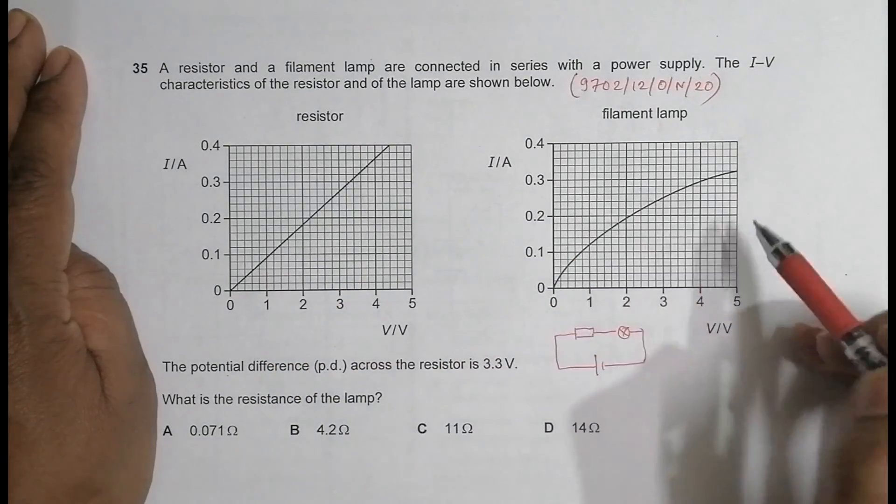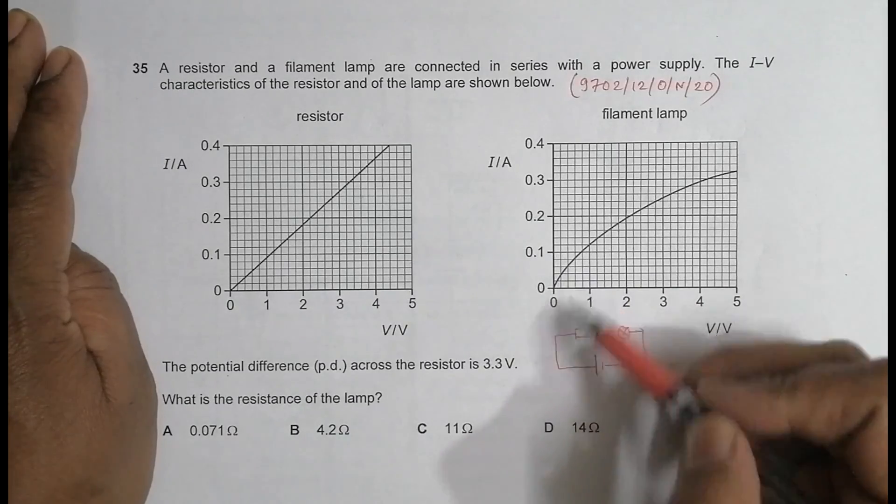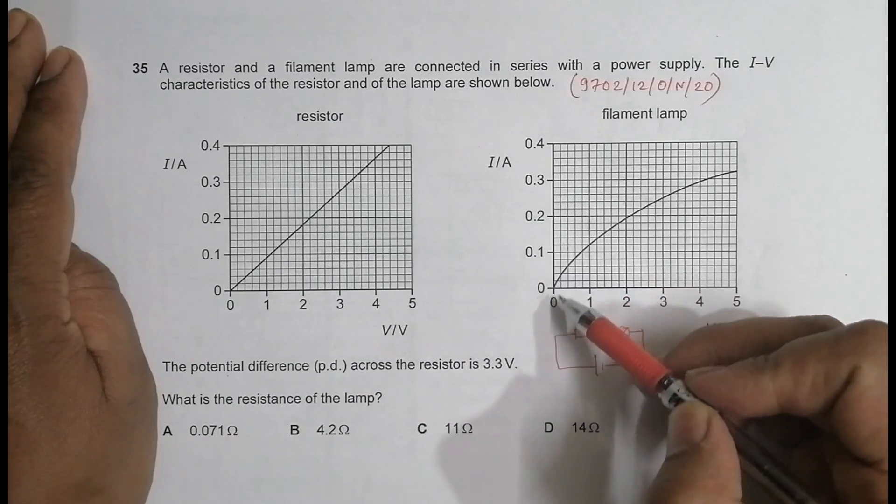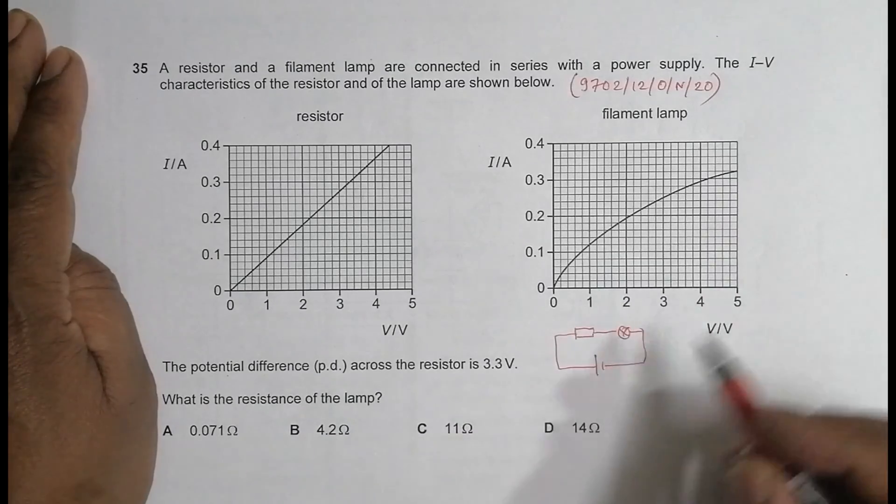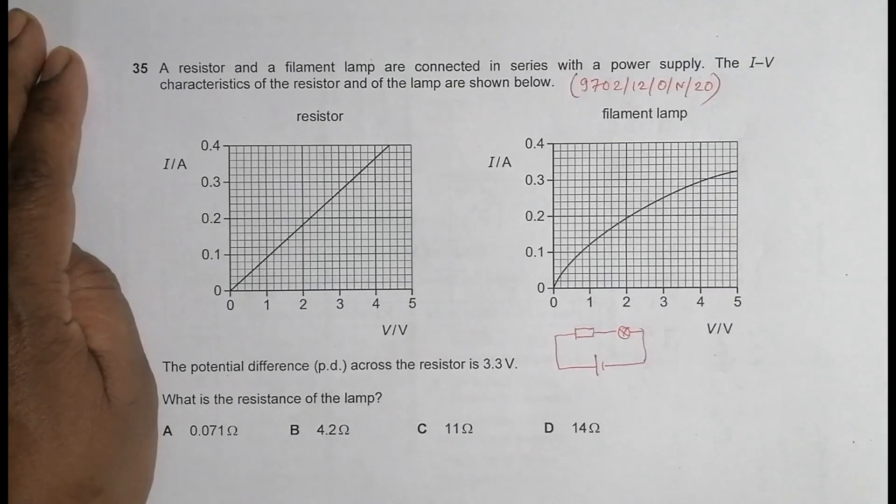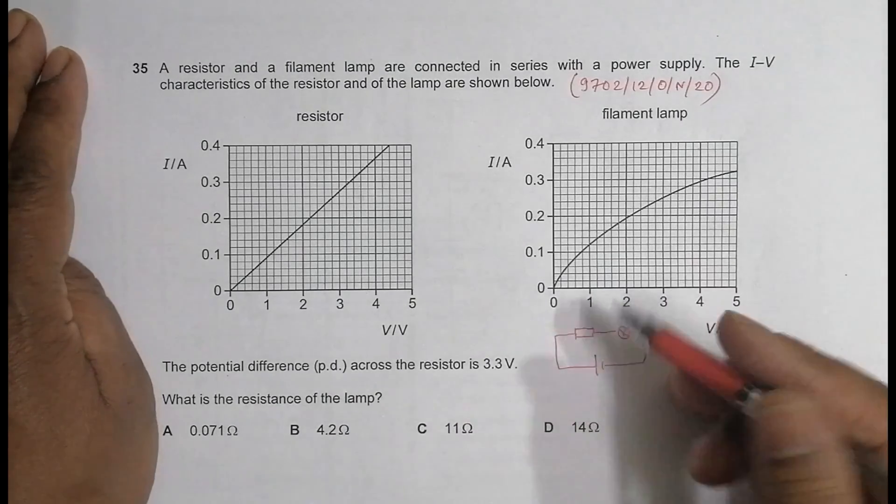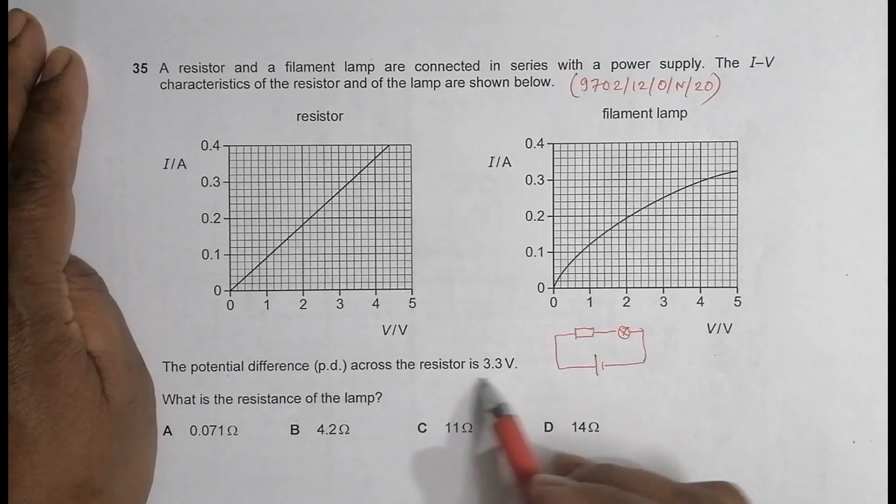And for the filament, the graph starts from zero but it inclines towards the voltage, which means it shows the increase in resistance as voltage increases. The PD across the resistor is 3.3 volts.